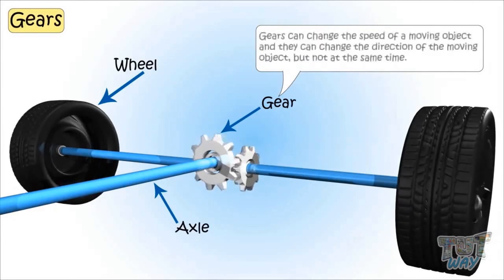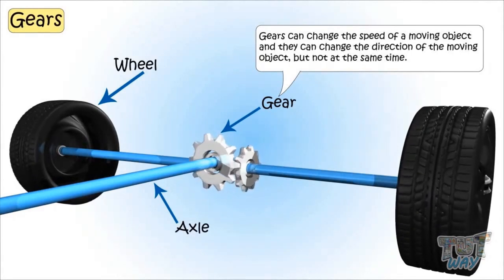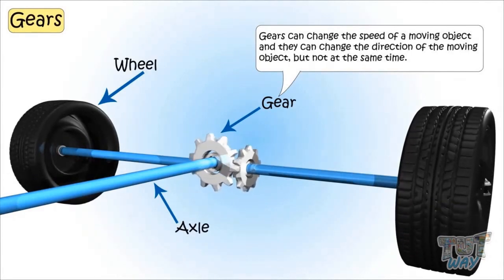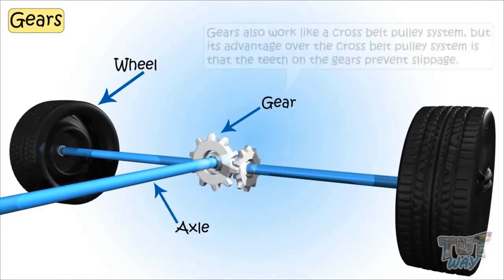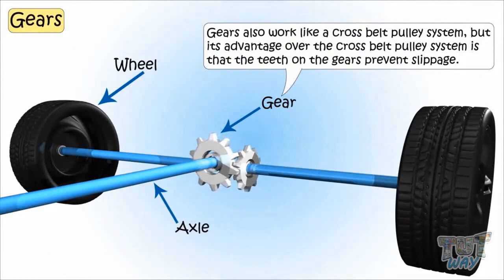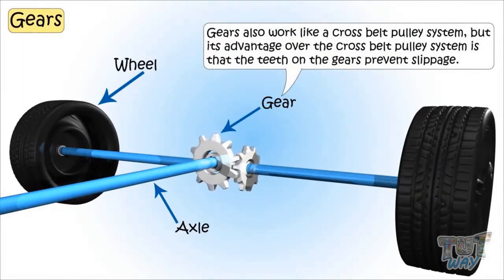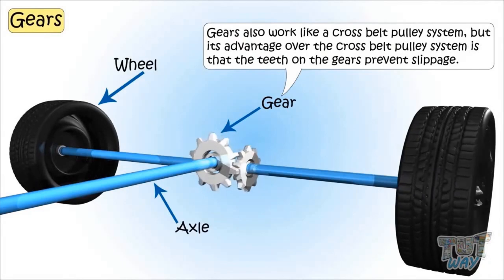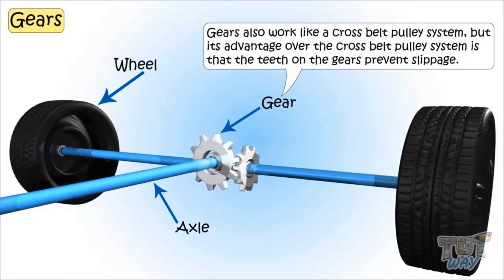Gears can change the speed of moving objects. Gears can change the direction of moving objects too, but not both at the same time. Gears also work like a cross belt pulley system, but have an advantage over it — the teeth on the gears prevent slippage.